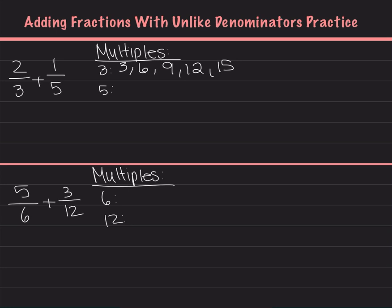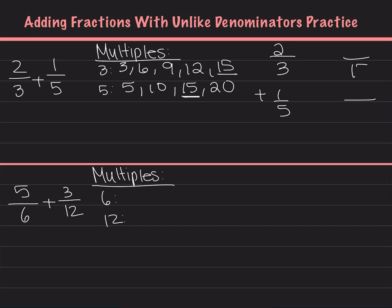For 5, the multiples are 5, 10, 15, 20. Between all of these numbers, 15 is the one that is the least and the common. Now, I will change the denominators for both of these fractions. So we had 2 thirds plus 1 fifth. The new denominator is now 15.